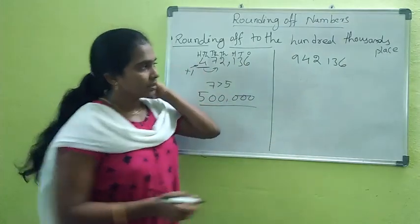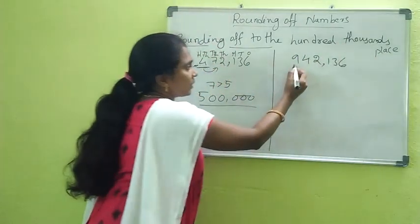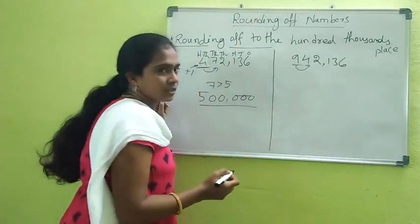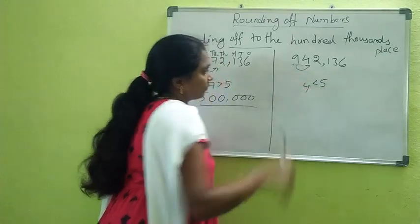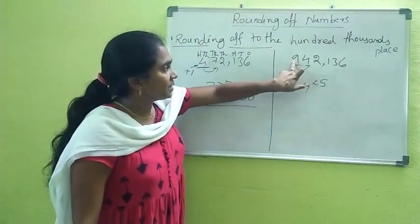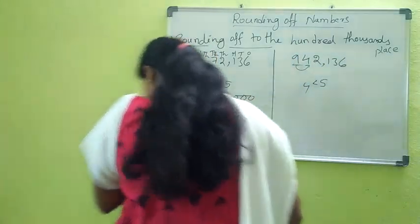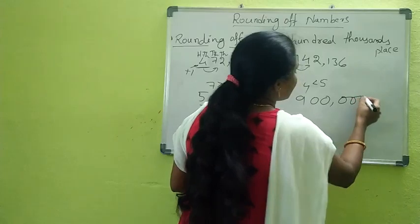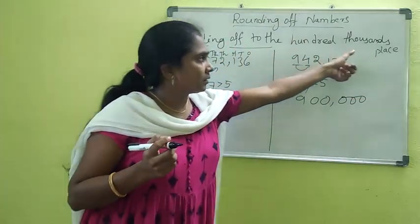Next example for the hundred thousands place: the hundred thousands digit is nine. The immediate right digit is four. Four is less than five, so keep nine as it is and make all remaining digits zero. The answer is 900,000.